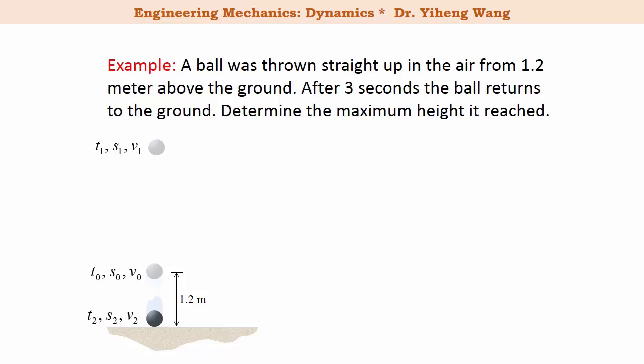Although you might think obviously the initial position of the ball is 1.2 meters, please be careful, because position has to be described within an established coordinate system. Therefore, only after we set the origin point O to be on the ground can we say that the initial position s₀ is 1.2 meters.